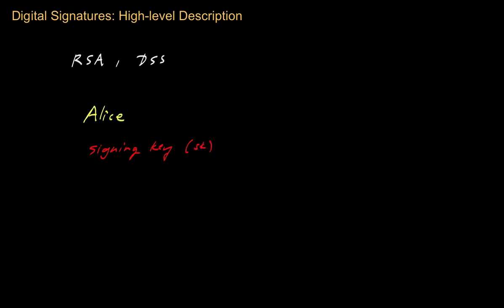And then Alice is also going to generate a separate key known as a verification key. The actual process of coming up with a signing key and a verification key happens concurrently. Alice will generate these two keys at the same time, and they're going to have a mathematical relationship. But the interesting thing is that the verification key is public, and the signing key will be private.